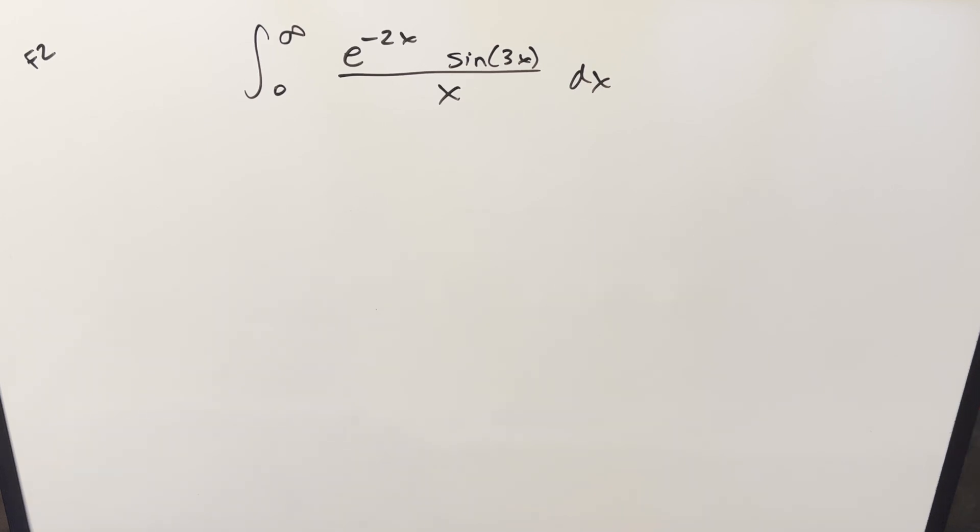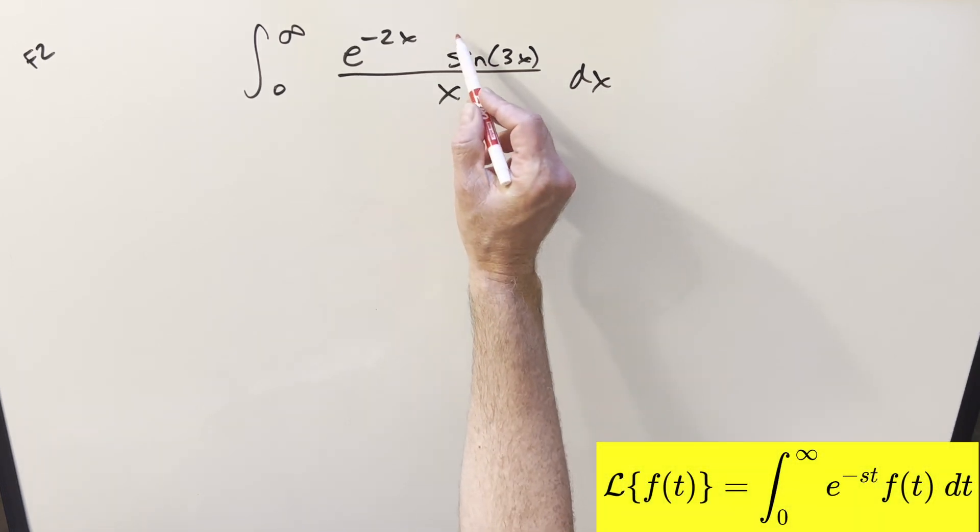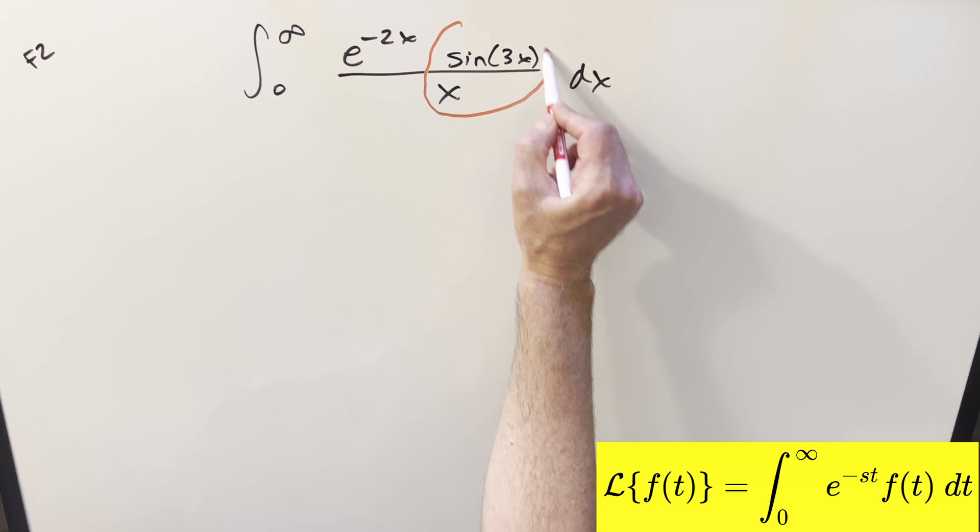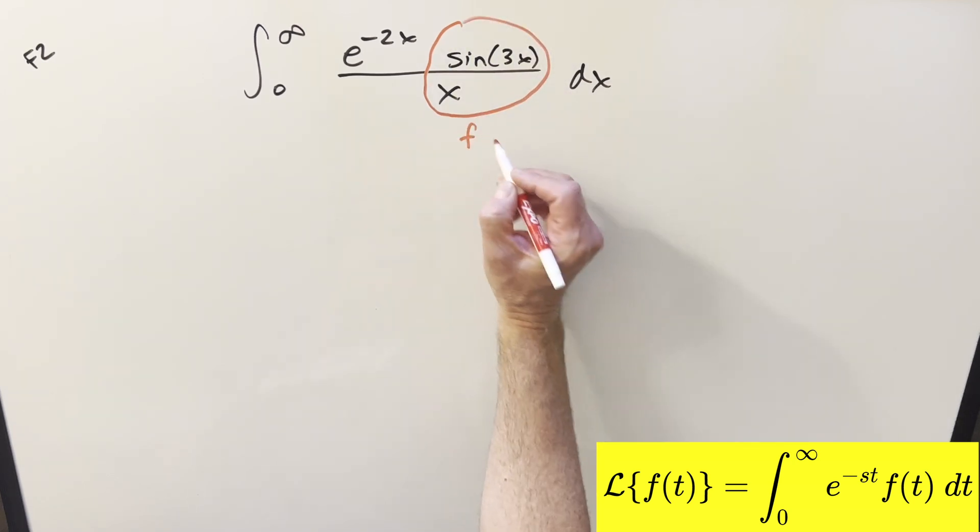Okay, what I want to notice on this one is it's exactly set up for us for a Laplace transform. Just recognizing for a Laplace transform, we're going to have e minus sx times some function.